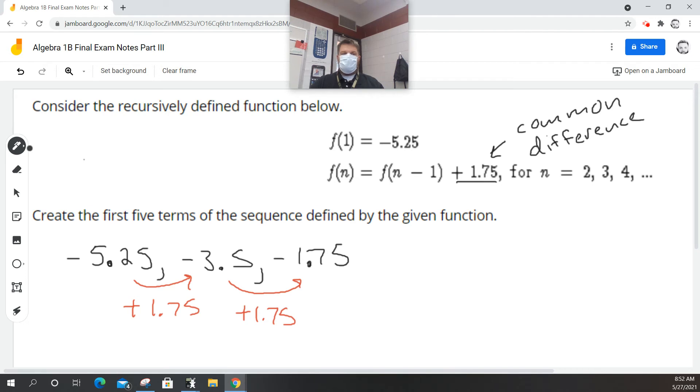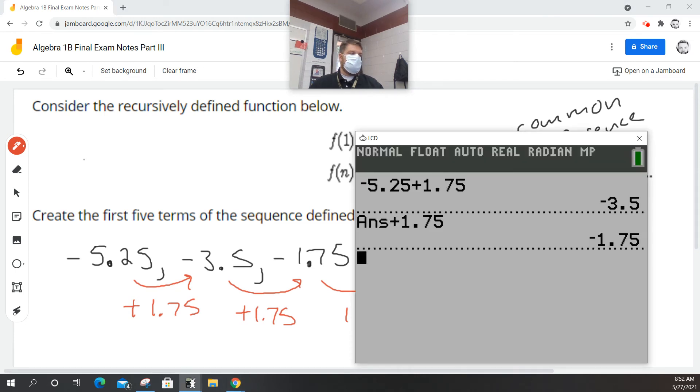And then for the next one, I don't need a calculator for this, but I'll go through the process and do it anyways. I'm going to add 1.75 to negative 1.75. Anybody want to guess what that value is? So here's a neat little trick. If I just hit enter again, it will automatically add 1.75 to the previous answer.